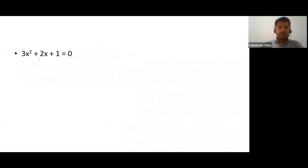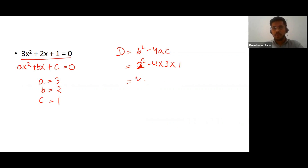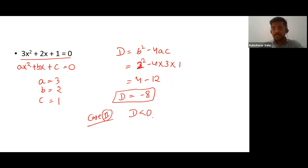Second case. Comparing the equation with ax² + bx + c = 0: a = 3, b = 2, c = 1. Finding the discriminant: D = b² − 4ac = 2² − 4(3)(1) = 4 − 12 = −8. Case two: whenever D is less than 0, the roots will be imaginary — the equation will not have any real roots.